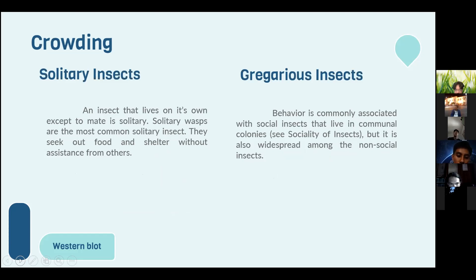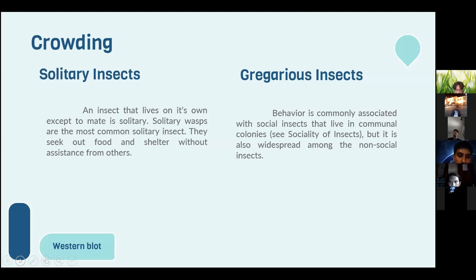The second activity pattern is crowding. Solitary insects live on their own except to mate — solitary wasps are the most common example, seeking out food and shelter without assistance from others. Gregarious behavior is commonly associated with social insects that live in colonies, but it is also widespread among non-social insects.